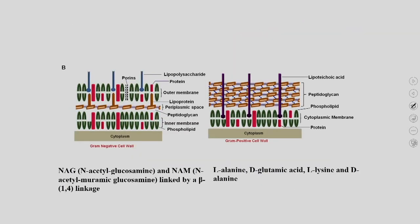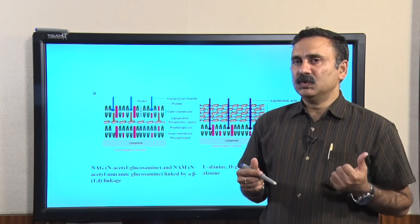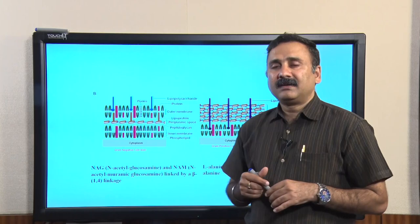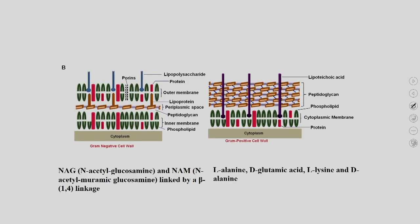Bacteria also have a very complex cell wall made up of different biomolecules, and based on these cell walls, bacteria are divided into two groups: gram-negative bacteria and gram-positive bacteria. In gram-positive bacteria, you have a thick layer of peptidoglycan — a complex biomolecule with an alternate arrangement of N-acetyl glucosamine (NAG) and N-acetyl muramic acid (NAM) linked by beta-1,4 linkage.